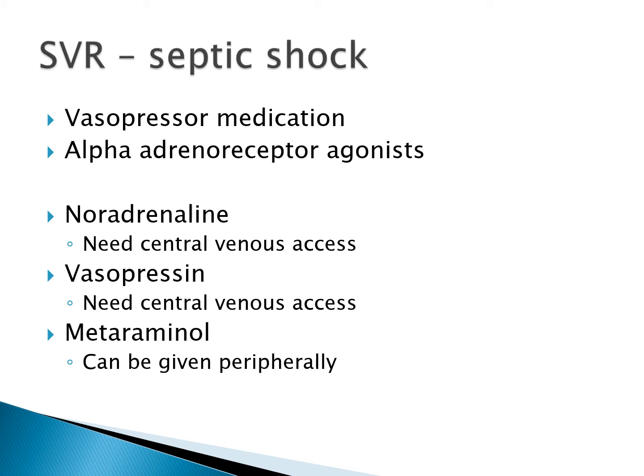Vasopressor medications in the form of alpha-adrenoceptor agonists are an important mainstay in managing septic shock. Where I work, noradrenaline is our first-line and vasopressin our second-line vasopressor — both of these drugs require central venous access. Metaraminol is a less potent vasopressor but can be given peripherally, providing bridging therapy until central access and a noradrenaline infusion are available.